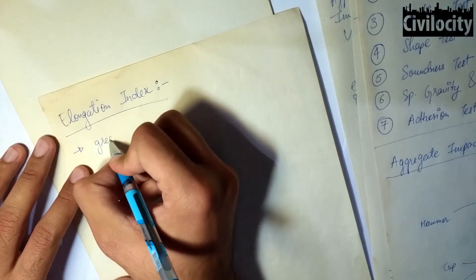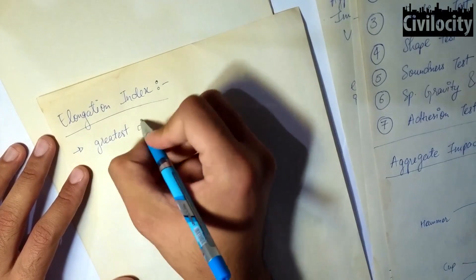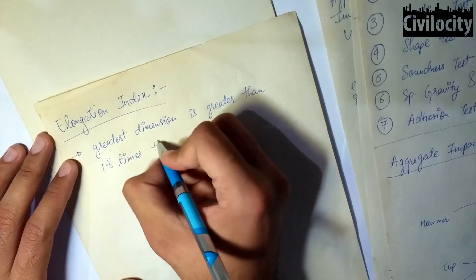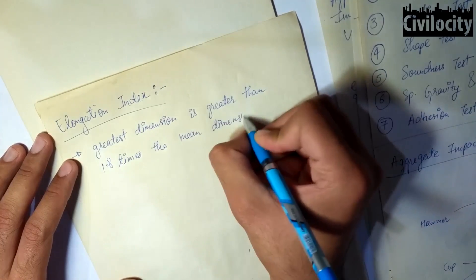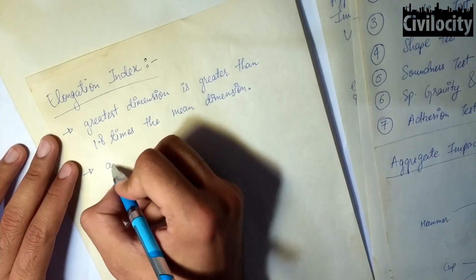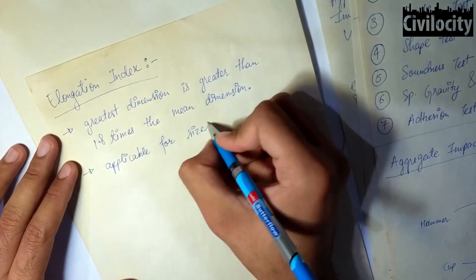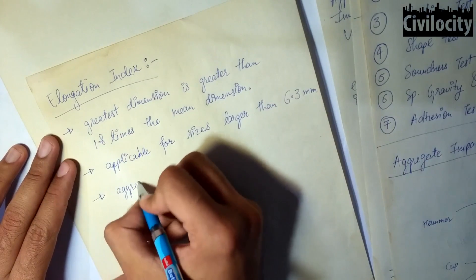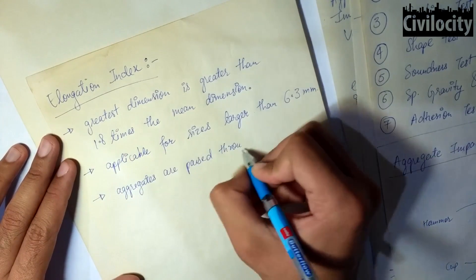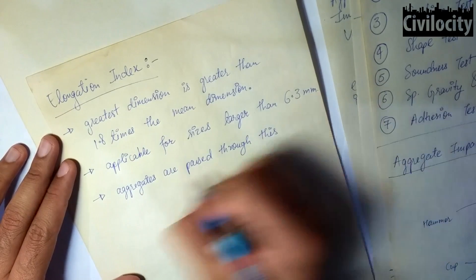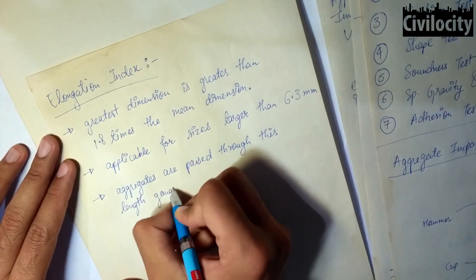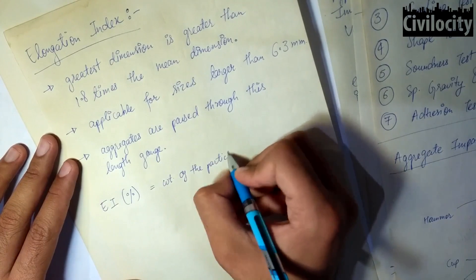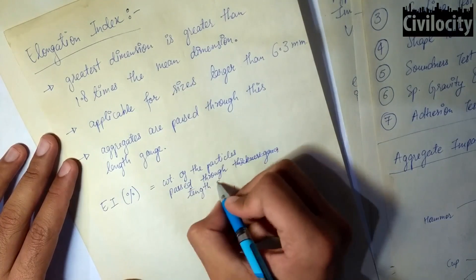Now let's talk about the elongation index of the aggregates. A particle is said to be elongated if its greatest dimension is greater than 1.8 times of its mean dimension. This test is also applicable for sizes greater than 6.3 mm. The particles are passed through a length gauge, and the weight of particles passing through is measured and divided by the total weight of the aggregates. The elongation index is also measured in percentage.